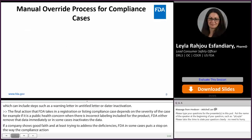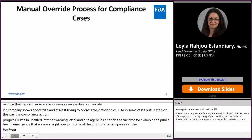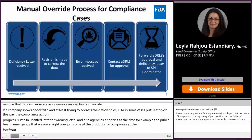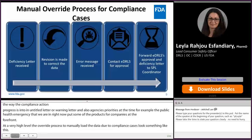At a very high level, the override process to manually load data due to compliance cases looks something like this: the deficiency letter is received and the company starts making revisions to correct the bad data. As a result, they receive an error message. If the error message is generated because you made a correction based on FDA's request, you contact our staff for approval and then forward the approval along with an attachment of the deficiency letter to the SPL coordinator and request a manual override.